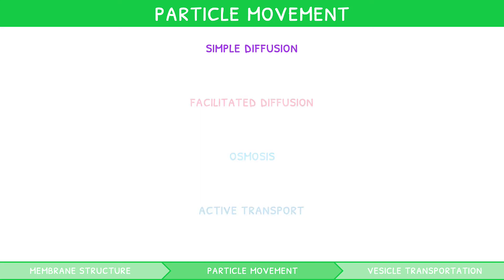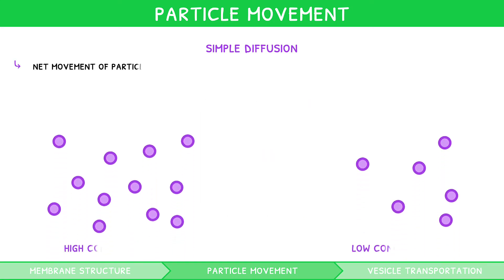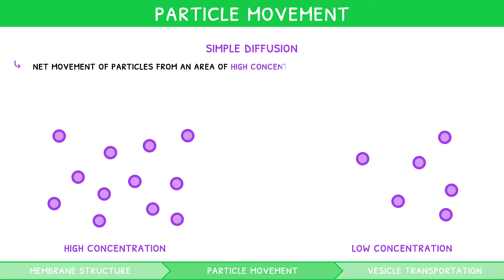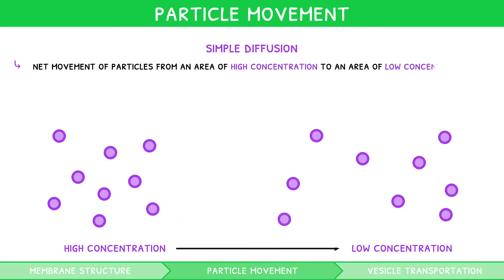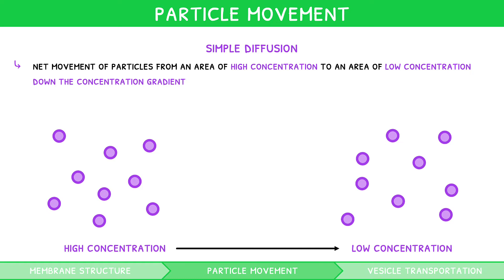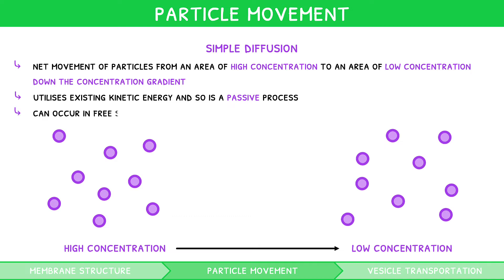Simple diffusion is the net movement of particles from an area of high concentration to an area of low concentration, down the concentration gradient. It utilises existing kinetic energy and so is a passive process. For example, pollen diffusing through the air. It is worth noting that diffusion can occur in free space or across a membrane.